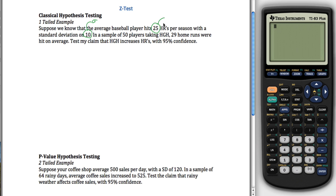For the population average, we've been using the symbol mu. However, we want to use mu for something else in this problem, so we're going to create a new symbol — mu naught, with a little zero next to it — and that's what we'll use for our population values. Then we have a sample of 50 players. We'll use the letter n to represent the number of observations. For those 50 players, on average, 29 home runs were hit.